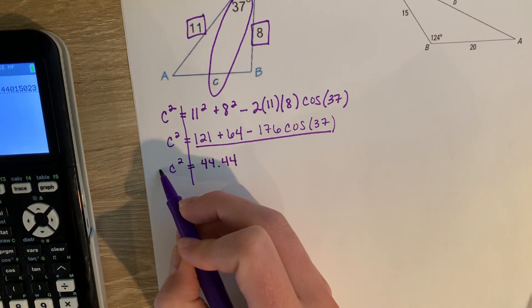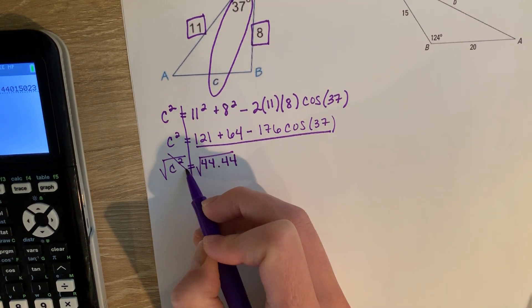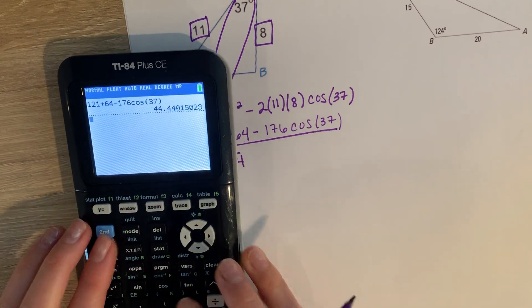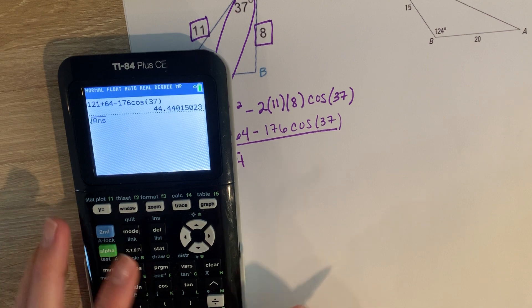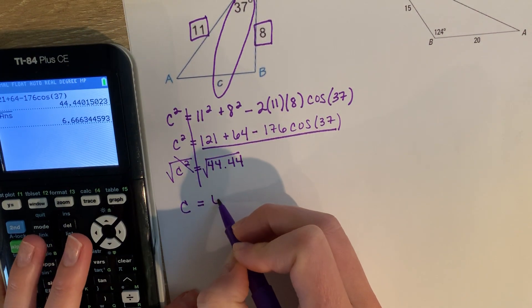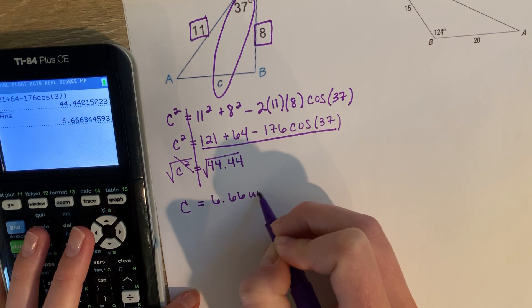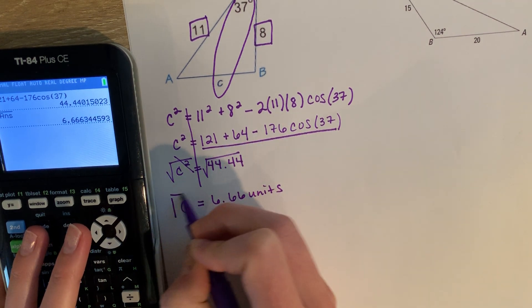And then to solve for c, I would have to square root to get the c by itself. Then we're going to take the square root of that answer, and we get approximately 6.66. And remember, this is a side, so it's in units.